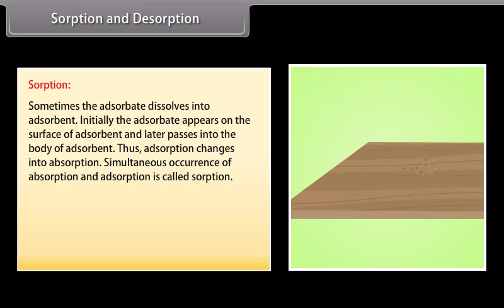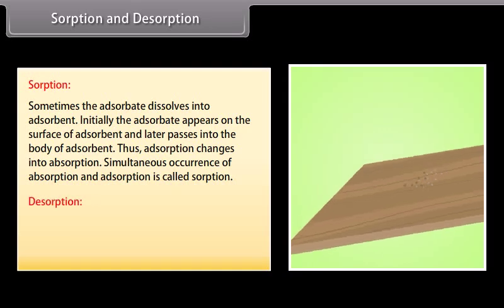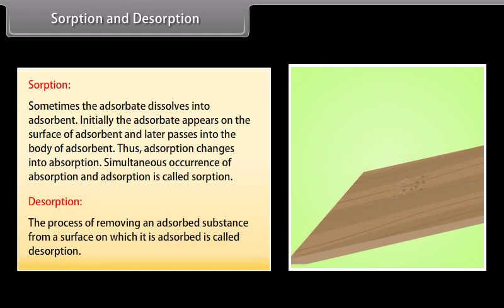Sometimes the adsorbate dissolves into the adsorbent — initially appearing on the surface and later passing into the body of the adsorbent, so adsorption changes into absorption. Simultaneous occurrence of absorption and adsorption is called sorption. The process of removing an adsorbed substance from a surface is called desorption.